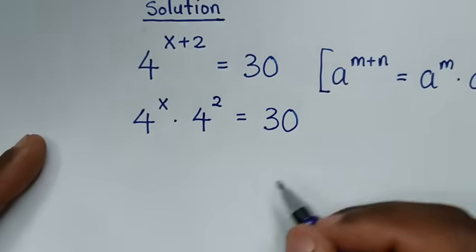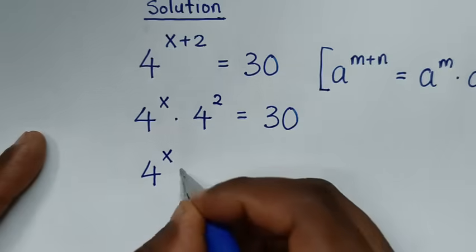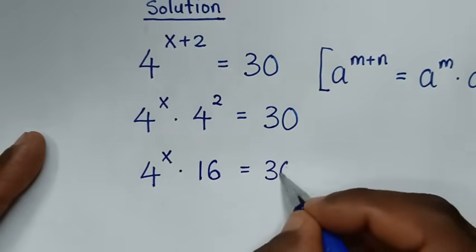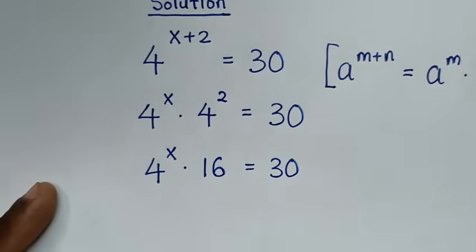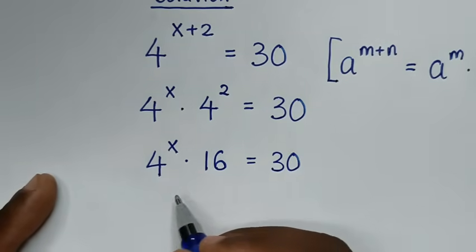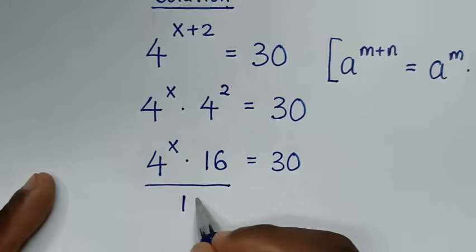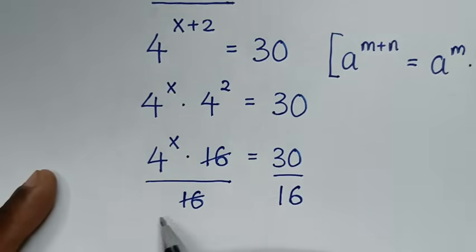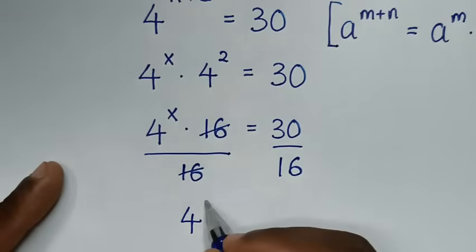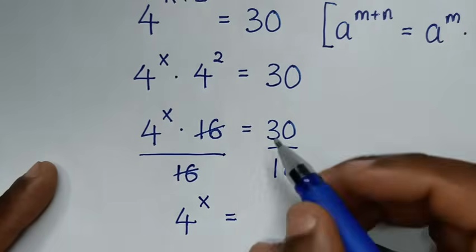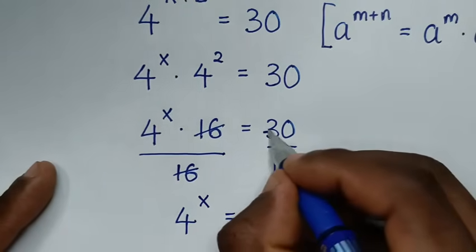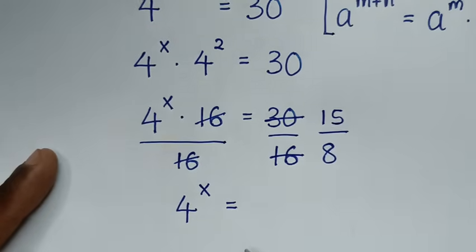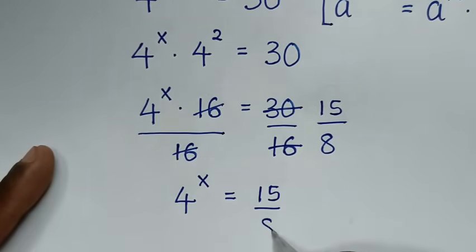In the next step, it will be 4^x times 4 squared, which is 16, equals 30. Then we divide both sides by 16, so 4^x equals 30 over 16. Simplifying by dividing numerator and denominator by 2: 4^x equals 15 over 8.